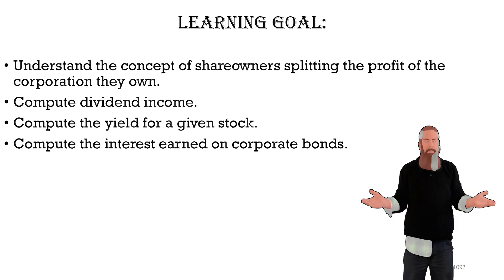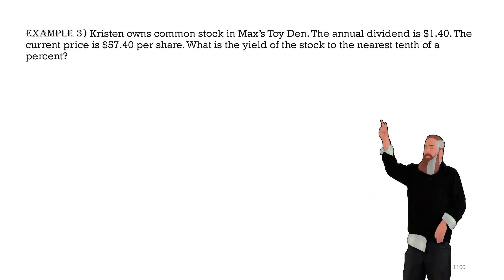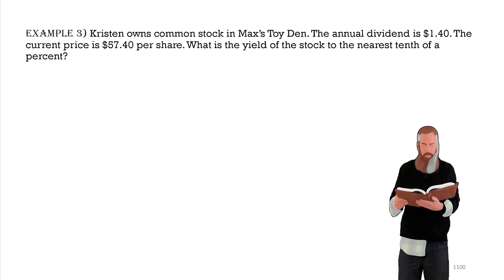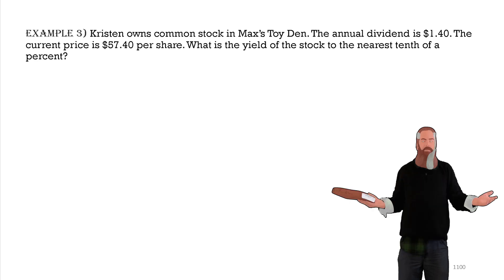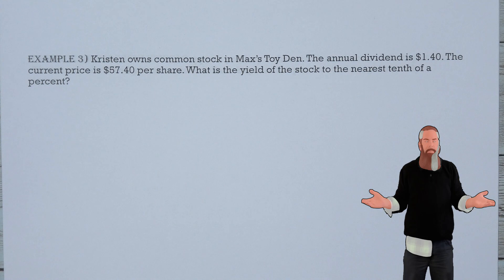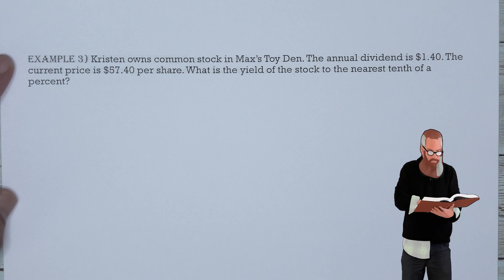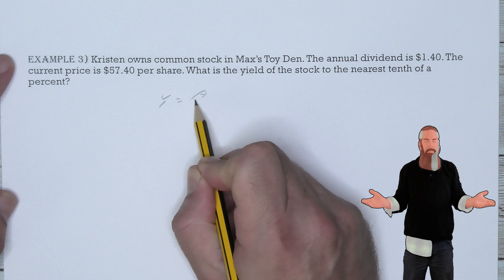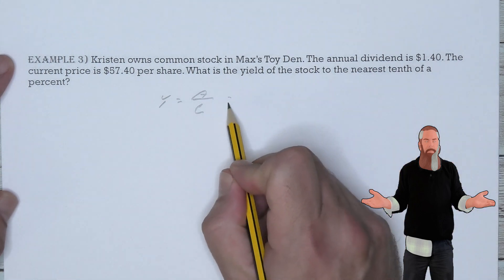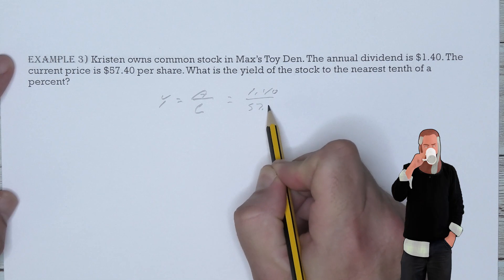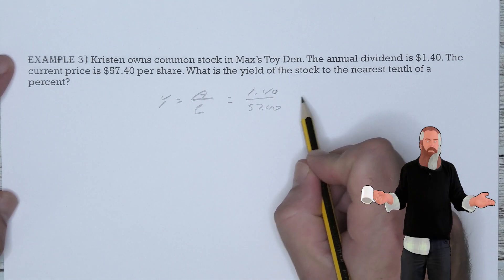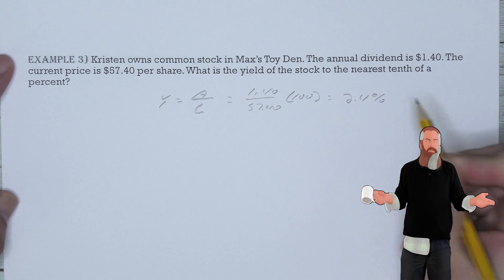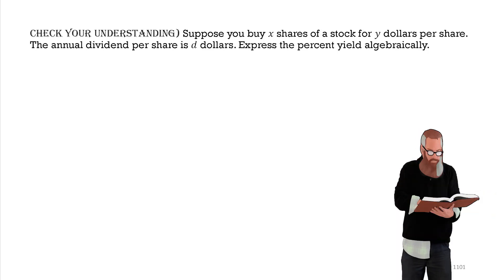Now let's compute the yield for a given stock. Kirsten owns common stock in Max Toy Den. The annual dividend is $1.40 and the current price is $57.40 per share. What is the yield to the nearest tenth of a percent? Write the yield as a fraction, convert to a decimal, then write as a percent. The yield equals the annual dividend divided by the current price: $1.40 ÷ $57.40, multiplied by 100, gives a yield of 2.4%.